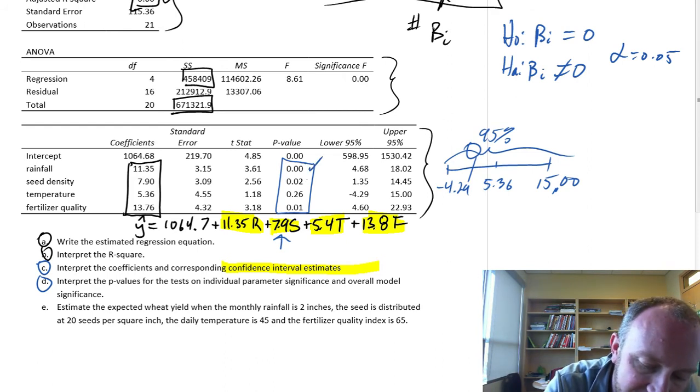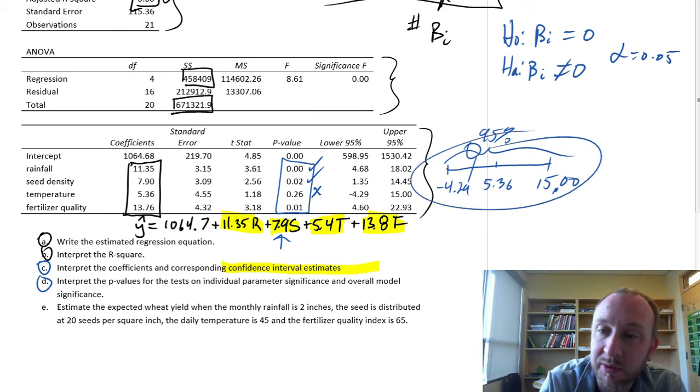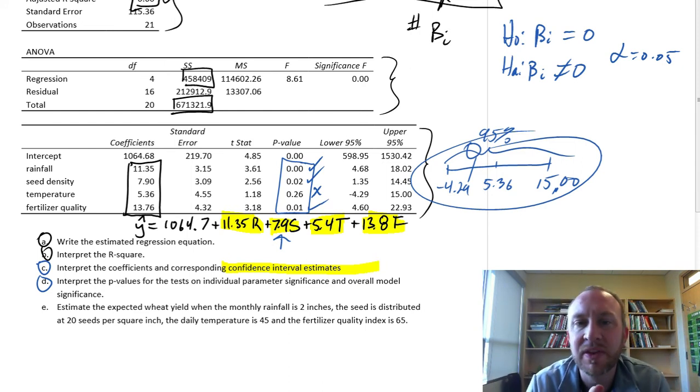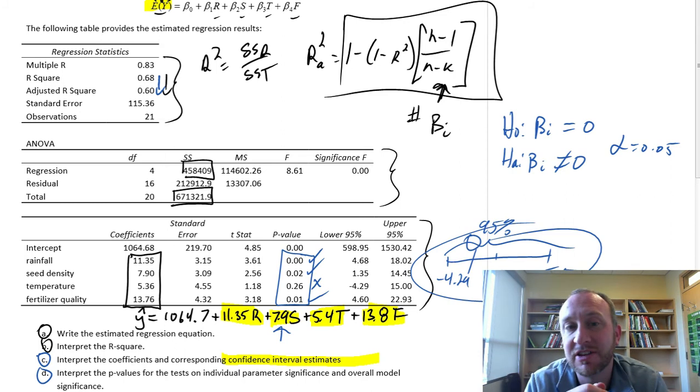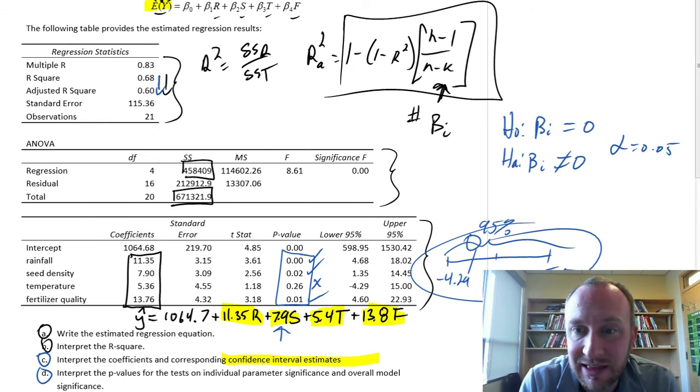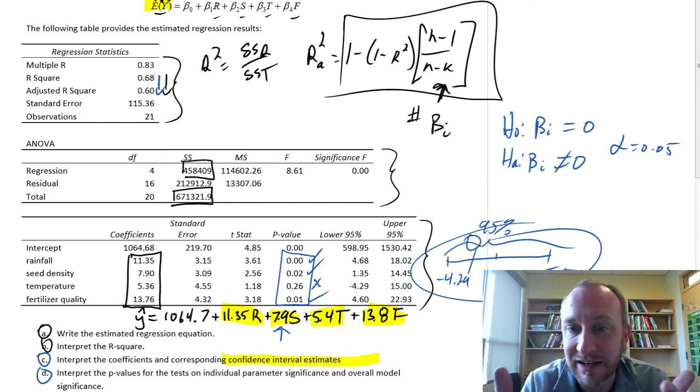If we use a level of significance of 0.05, rainfall is significant. Seed density is significant. Temperature is not significant. And that's what we saw when we looked at its confidence interval as well. And fertilizer quality is significant. So of our four independent variables, only three of them turned out to be statistically significant. And that might also be part of the reason why we saw this somewhat large drop from the R-squared to the adjusted R-squared. It's because we have one independent variable in that model that isn't contributing anything to capturing the variation in our dependent variable. It's not a statistically significant explanatory variable for predicting y.